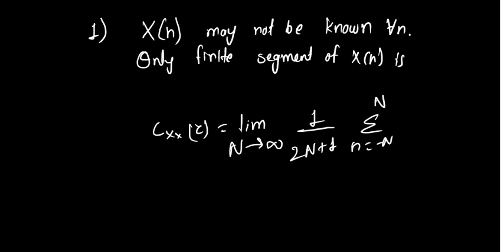The autocorrelation sequence is given by the expectation value, and if you will solve it is something like this. Here, as you can see, the n is ranging from minus n to n, and n is tending to infinity. Due to this reason we can say that we need our X(n) from minus infinity to infinity, and this is not possible.